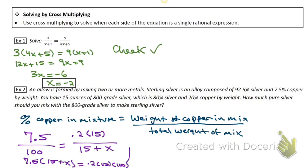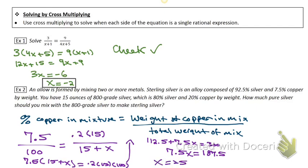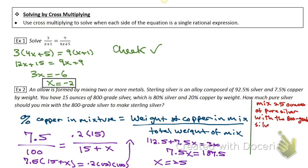You have 15 ounces of 800-grade silver, so you would cross multiply here, then distribute and solve the equation. The answer is to mix 25 ounces of pure silver with the 800-grade silver to make sterling silver.